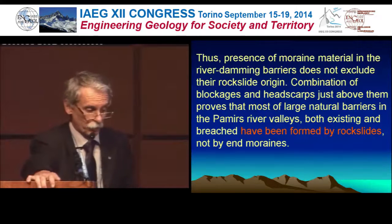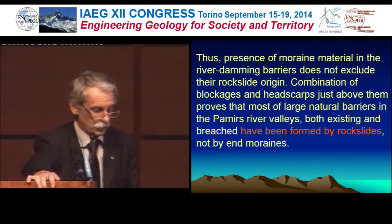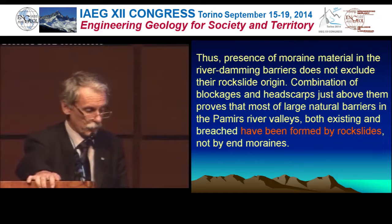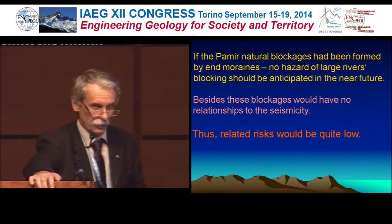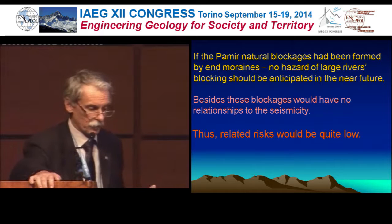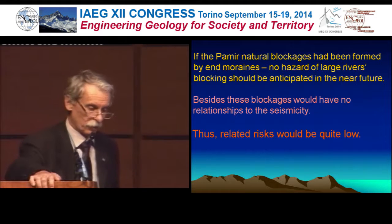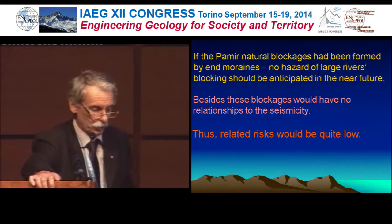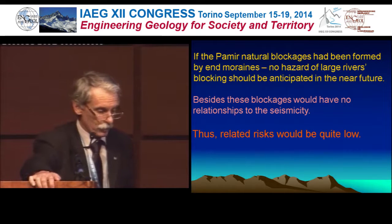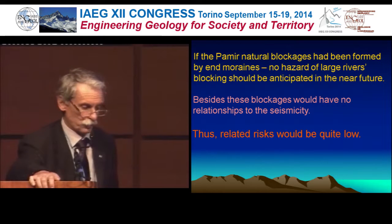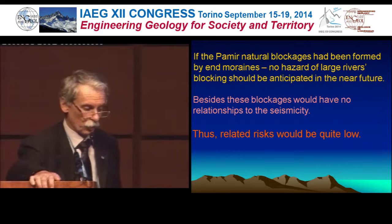Thus, presence of moraine material in river damming barriers does not exclude their rock slide origin. The combination of blockages and headscarves just above them proves that most large natural barriers in the Pamir river valleys — both existing and breached — have been formed by rock slides, not by end moraines. But if the opposite point of view is correct and these blockages were formed by end moraines, it means that no hazard of large river blocking should be anticipated in the near future due to the present-day climatic situation in the region. Besides, these blockages would have no relationship to seismicity, and related risks would be quite low.